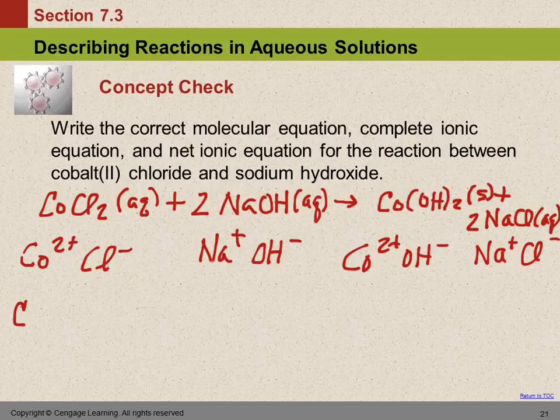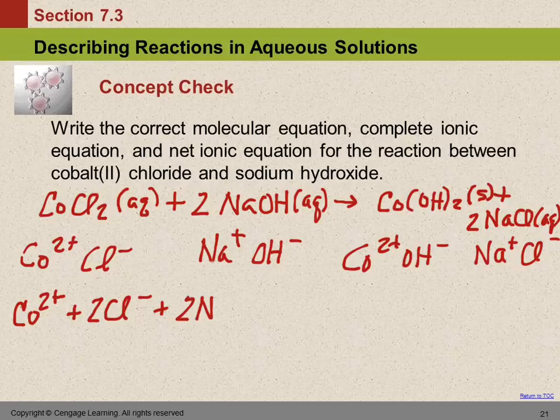Here we have, so we're going to have Co2+, and I'm going to skip writing the aqueous because I'm not going to have enough room. That's a plus. And we've got two chlorides. And from sodium hydroxide comes apart into sodium and hydroxide, and there's two. So we're going to get two of each of those ions. That's 2Na+ and 2OH−.